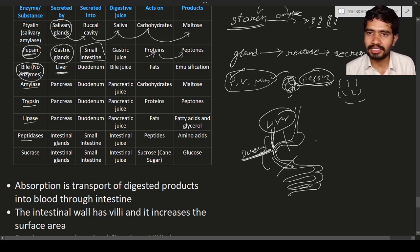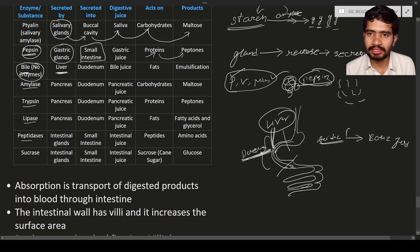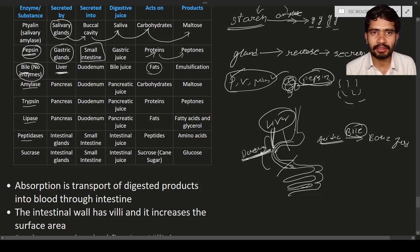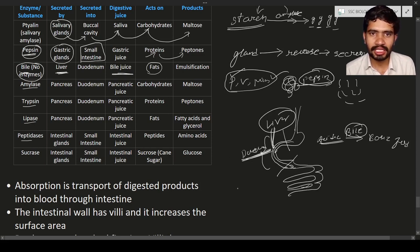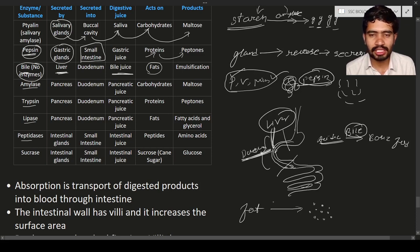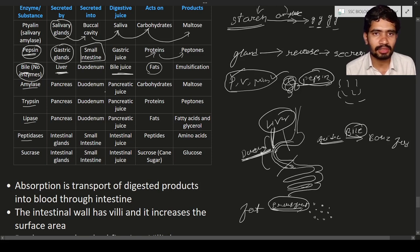The bile juice causes the acidic food to become more basic in nature. Bile acts on the fats. When the fats are broken down by bile juice, they turn into fatty acids. This process of breaking fat into tiny droplets is known as emulsification, and it is carried out by bile juice.